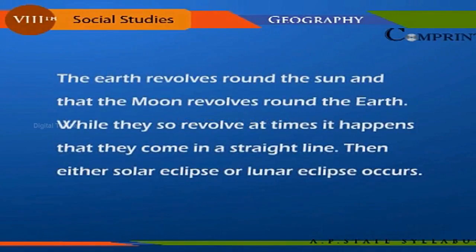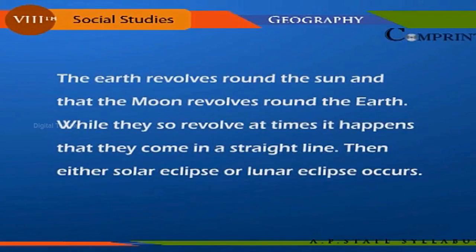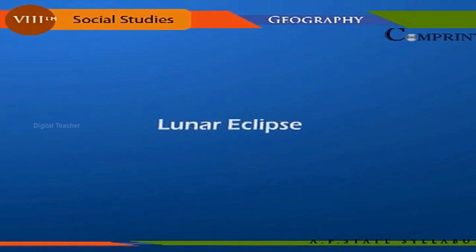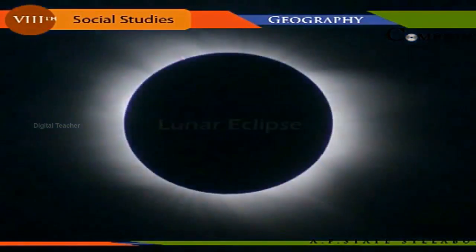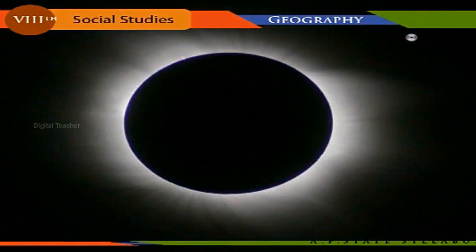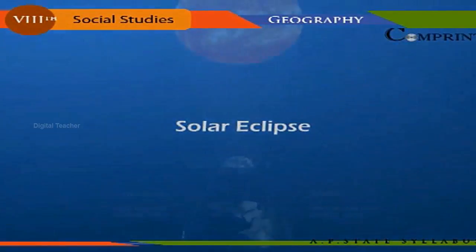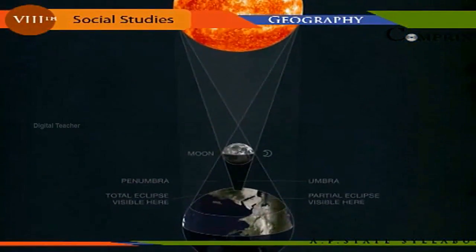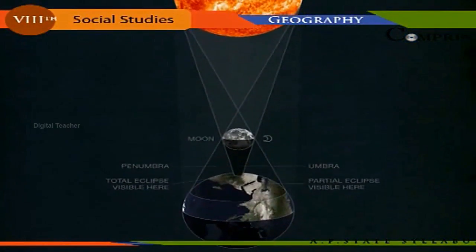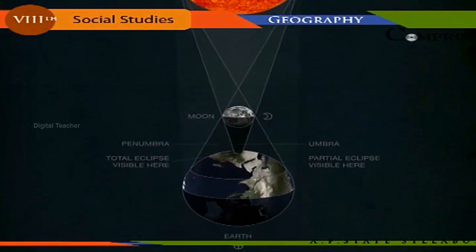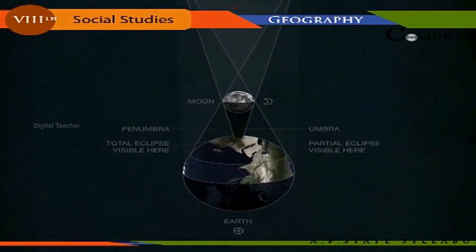Eclipses: the earth revolves around the sun and the moon revolves around the earth. At times they come in a straight line, causing either a solar eclipse or a lunar eclipse. A lunar eclipse occurs when the earth obstructs the sun's rays from falling on the moon. A solar eclipse occurs when the moon obstructs the sun's rays from falling on the earth; solar eclipses occur only on new moon days.